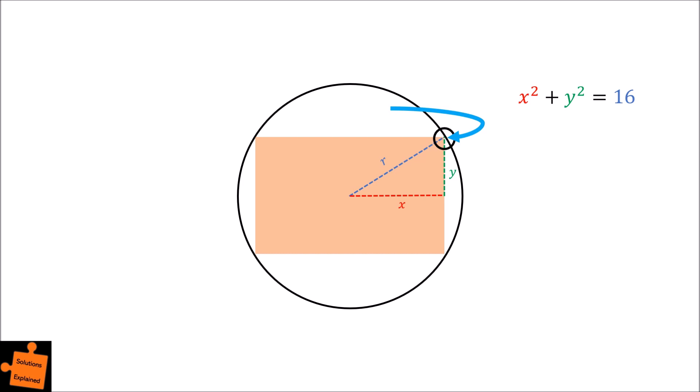To find the area of the rectangle, it makes sense that we must first find the length and the width. By our notation, the length will be equal to 2x and the width will be equal to 2y, and therefore the area can be written as 2x multiplied by 2y.